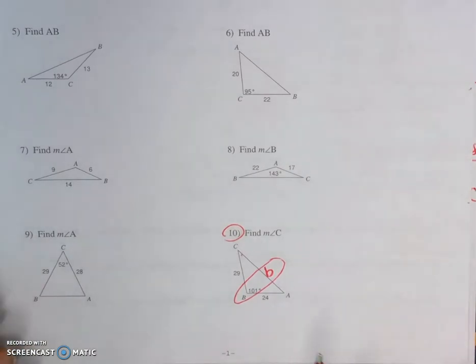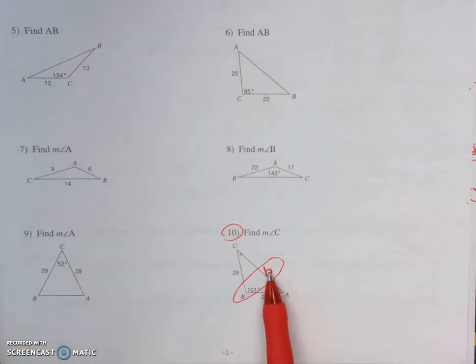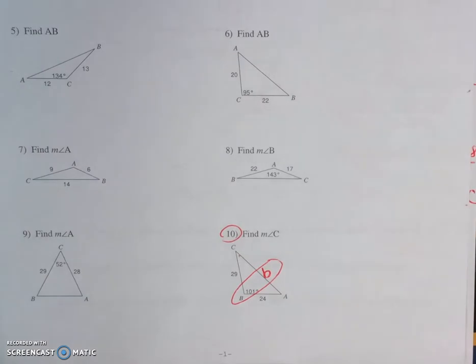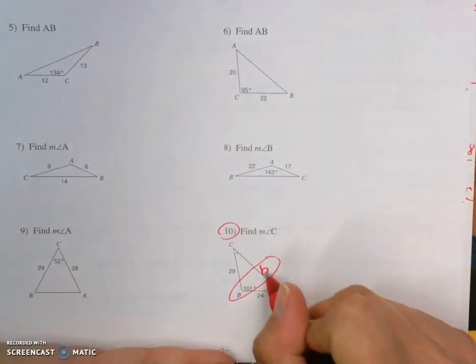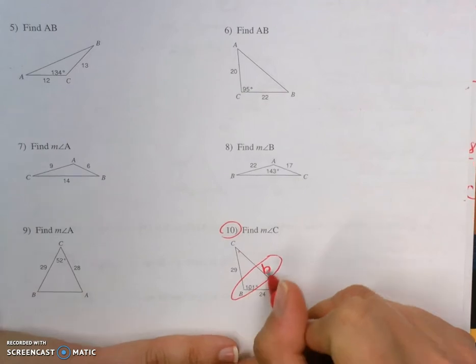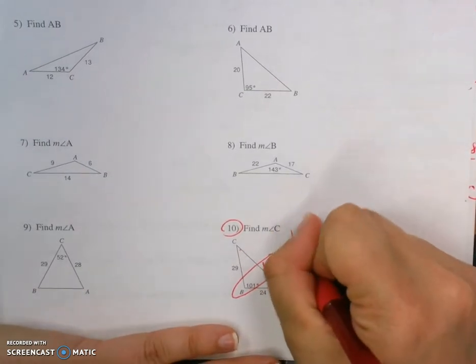So in this example, we can solve for this, and then once we have that, then we can use Law of Sines to find angle C. So Law of Cosines first, and with this, we always use these as your beginning and ending points.